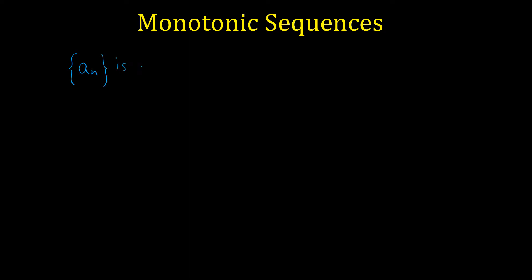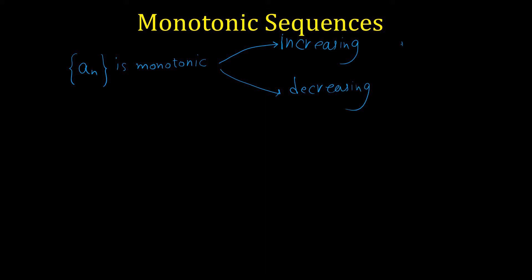In this video I'm going to show you what is a monotonic sequence and how we can determine if a sequence is monotonic or not. We say a sequence a_n is monotonic if either it is an increasing sequence or it is a decreasing sequence. A sequence is increasing if each term is bigger than the previous term, so a_n is less than a_{n+1}, and the sequence is decreasing if any term is bigger than the next term.